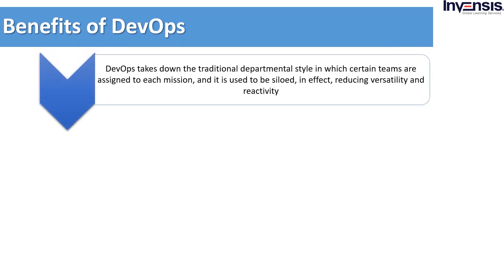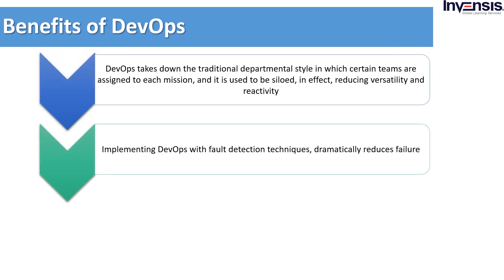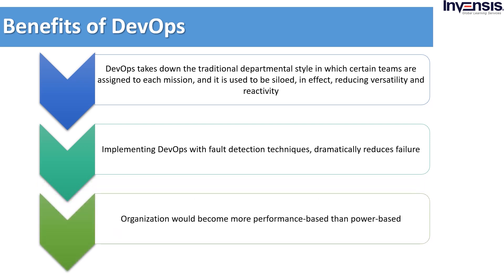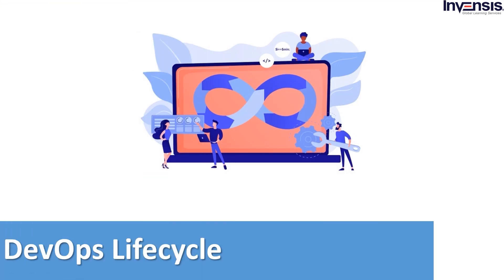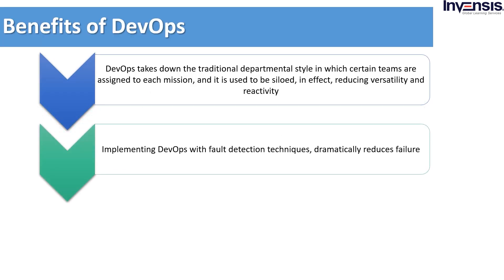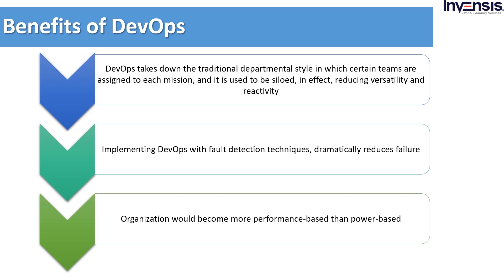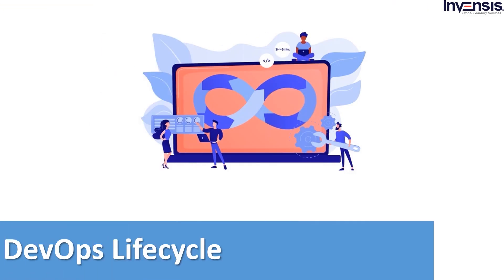DevOps takes down the traditional departmental style in which a certain team is assigned to each mission and it used to be siloed, which reduced versatility and reactivity. DevOps encourages cooperation and collaboration beyond the lines of an organizational hierarchy. When companies implement DevOps with fault detection techniques, it contributes to dramatically reducing failures. DevOps is commonly implemented on top of the agile model — it facilitates teamwork, modular programming, etc., making it easy to identify faults.